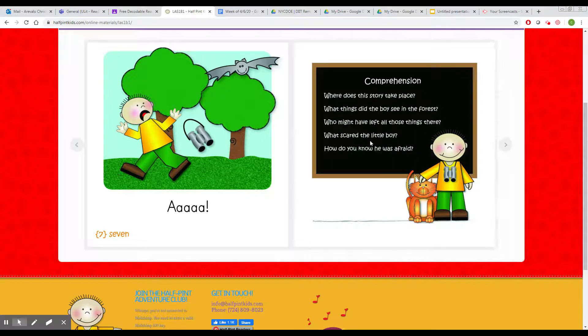What scared the little boy? A bat. How do you know he was afraid? Yep, he said ahhh. He screamed. And look at his face. His face looks like he's scared. He dropped his binoculars and started to run away. Good job.